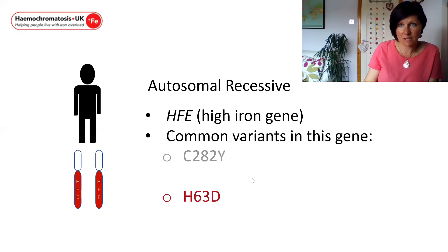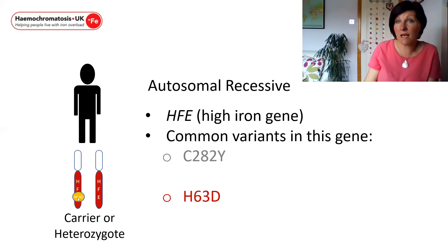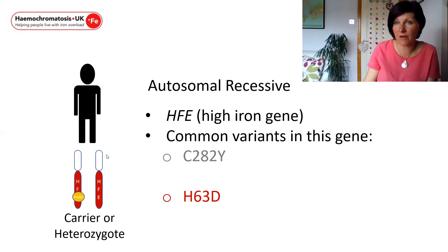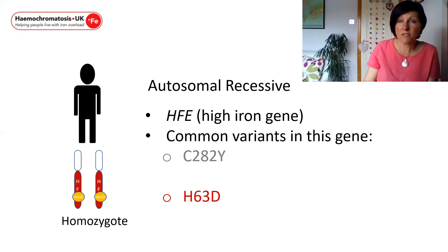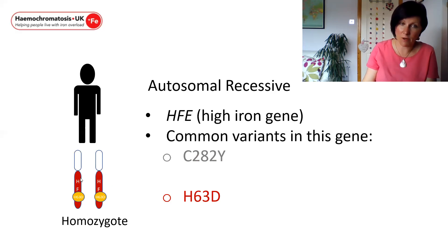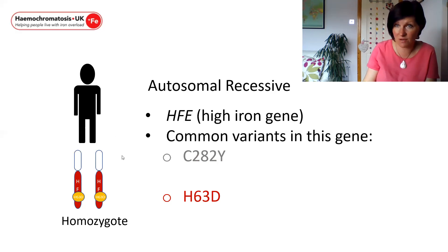H63D is a milder variant. If the man on the slide has inherited a single H63D variant, this again would mean he is a carrier for H63D. Because this is a milder version and he also has a full working copy of the gene, you wouldn't expect this man to be at risk of any symptoms. It is possible that he may have inherited two copies of H63D, in which case he would be called a homozygote for H63D. In this scenario, he would have two slightly faulty genes but should still have sufficient protein to maintain his iron levels, so you wouldn't anticipate that H63D homozygotes would iron overload.